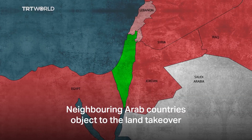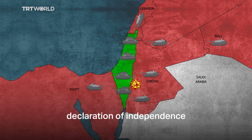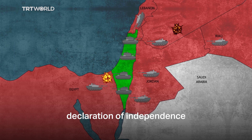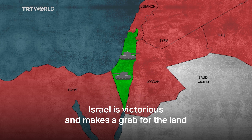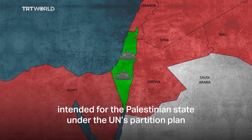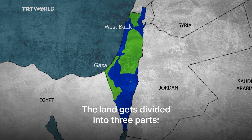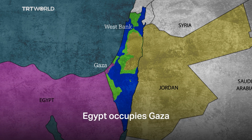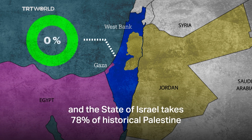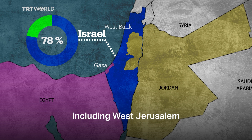Neighboring Arab countries object to the land takeover, and on the day following the State of Israel's Declaration of Independence, the First Arab-Israeli War breaks out. Israel is victorious and makes a grab for the land intended for the Palestinian state under the UN's partition plan. The land gets divided into three parts: Jordan occupies the West Bank and East Jerusalem, Egypt occupies Gaza, and the State of Israel takes 78% of historical Palestine, including West Jerusalem.